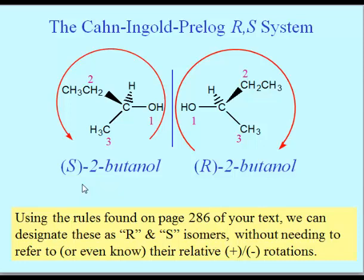Doing this doesn't tell us anything about which enantiomer will rotate plane-polarized light in a particular direction — we know how to match those up because these are well-studied molecules. But this does allow us, if we know these rules, to take the names and draw one particular enantiomer versus the other. A lot of the exercises and worksheets in this chapter involve recognizing enantiomers and assigning either R or S to them.